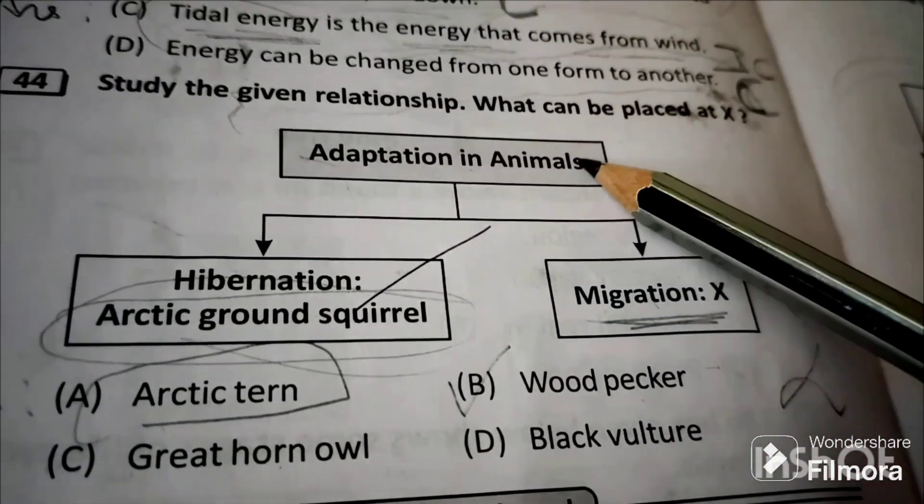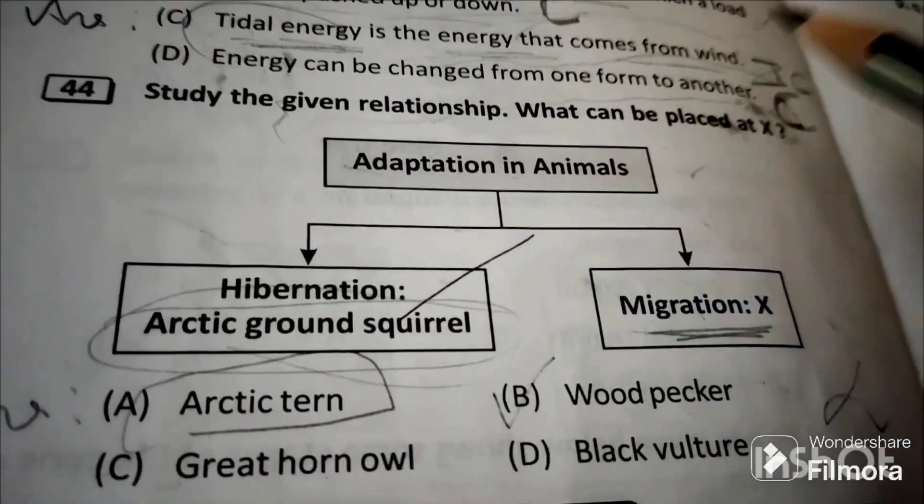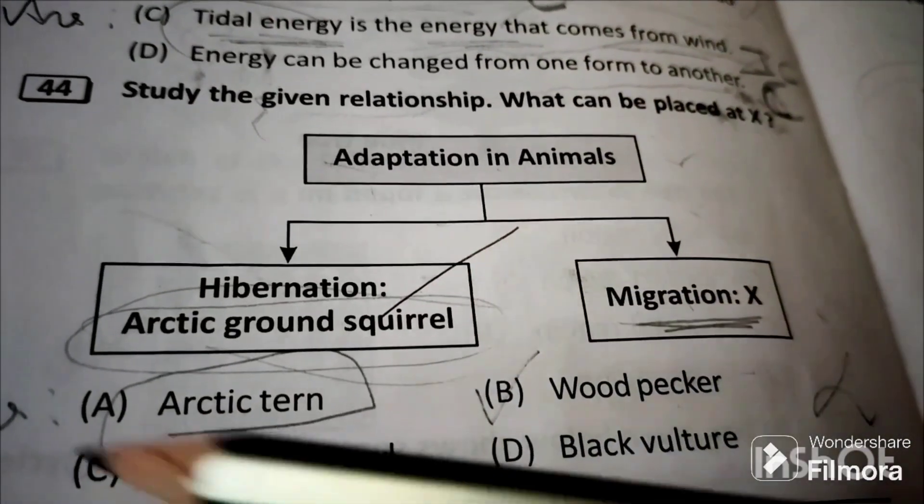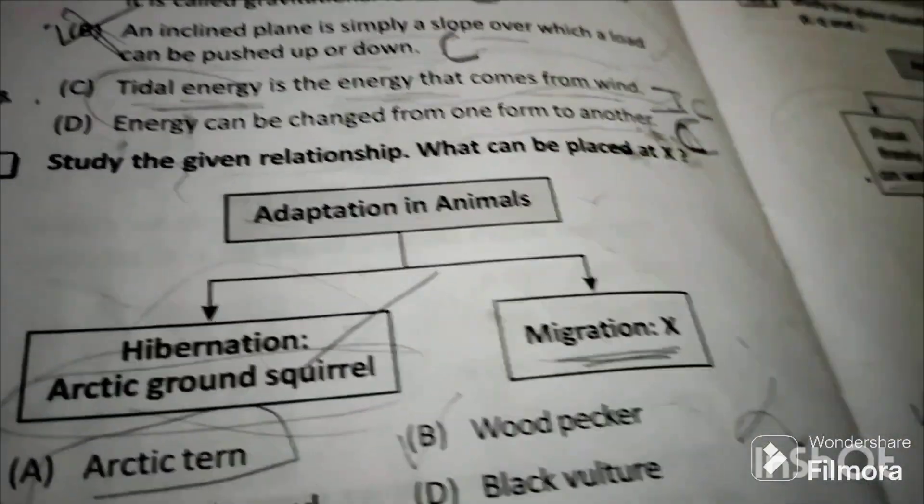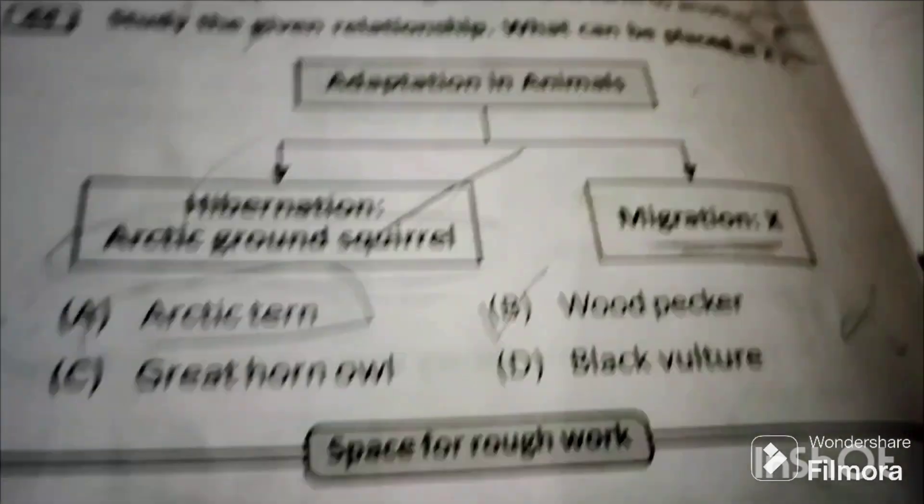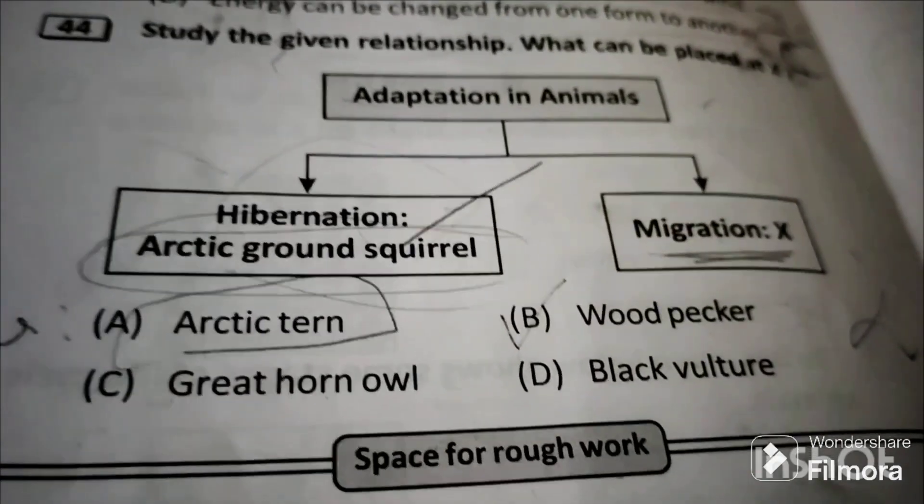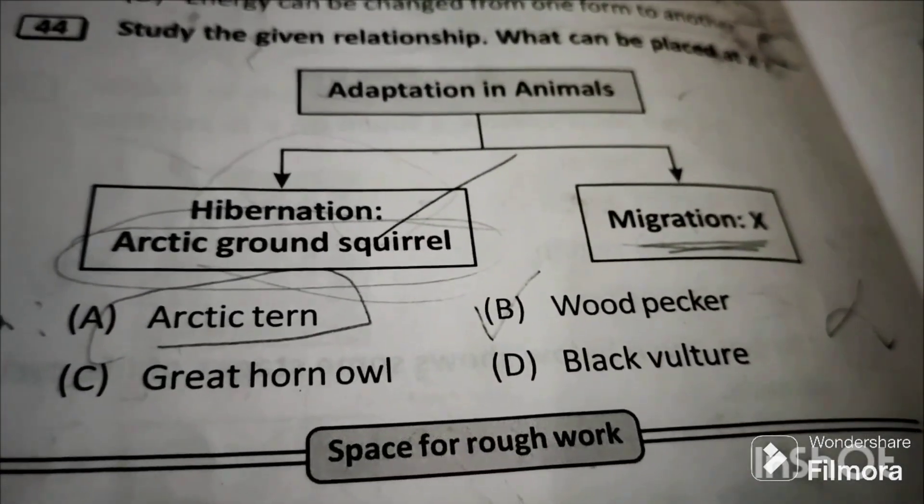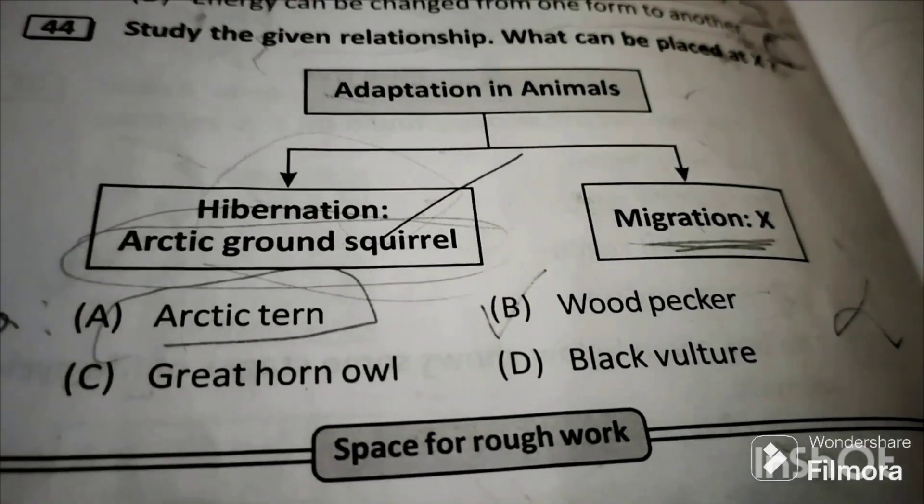Question 44: Study the given relationship. What can be placed at X and Y? Adaptation in animals. Hibernation means the animal goes to sleep for a long time during winter. Which will go to sleep? Arctic tern, because it lives in cold areas and it has to go to sleep for long time in winter.